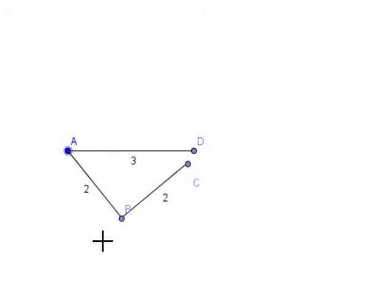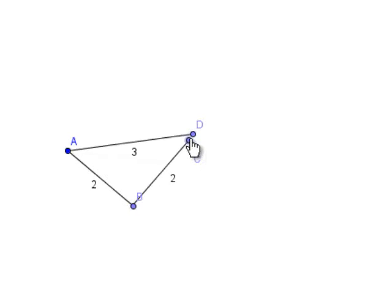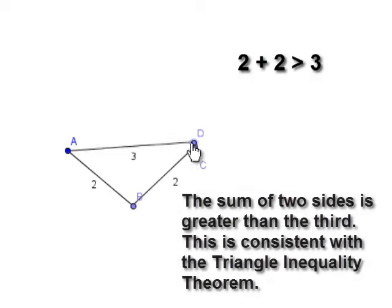So the answer to this question is yes. I can form a triangle with these side lengths. And that makes sense because if I take the two smallest sides, which are both 2, and I find their sum, which is 4, it is greater than the third side. So this follows the triangle inequality theorem.